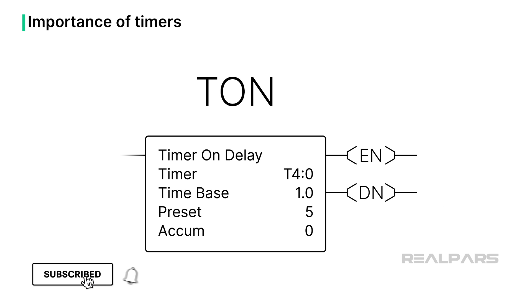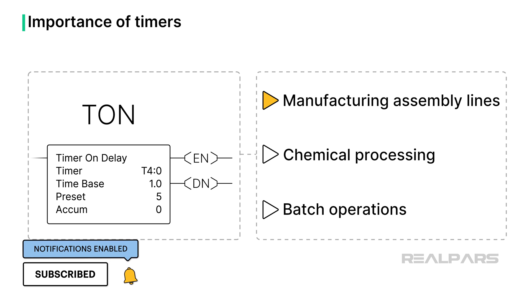As you can see, timers are critical in many industries such as manufacturing assembly lines, chemical processing, batch operations such as paint manufacture, and others.